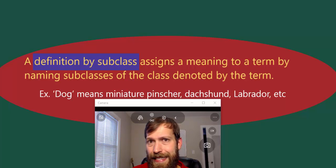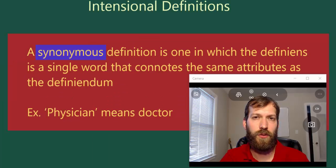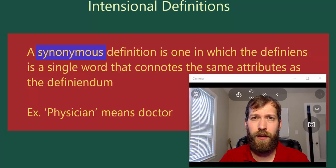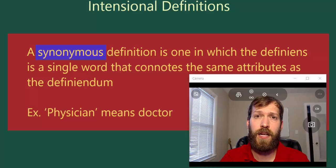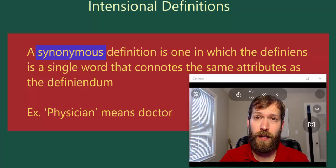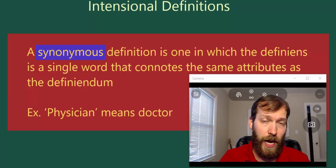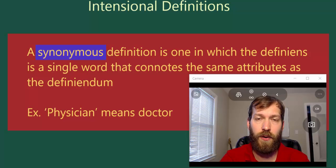Now we turn to the intentional definitional techniques. The first is definition by using a synonymous word. A synonymous definition is one in which the definiens is a single word that connotes the same attributes as the definiendum. For example, a child hears the word 'physician' for the first time and asks what it means; the mother says 'physician means doctor.' The child, familiar with 'doctor,' now knows those two words have the very same meaning and connote the very same attributes.